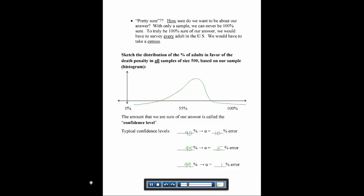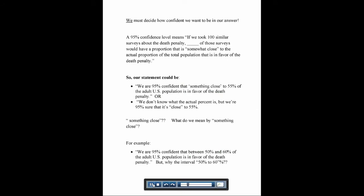Those error values are called our alpha values. When you're given a problem, you'll be told how confident you want to be. A 95% confidence level means that if we took 100 similar surveys about the death penalty, 95 of those surveys would have a proportion that's very close to the actual proportion. So if we've chosen our confidence level — like 95% — we could say: we are 95% confident that something close to 55% of all the adult U.S. population is in favor of the death penalty.